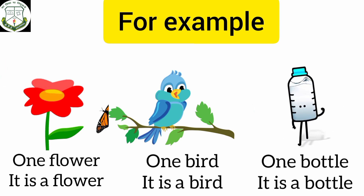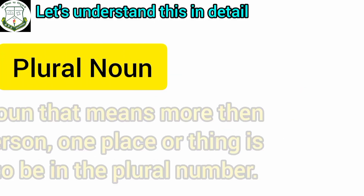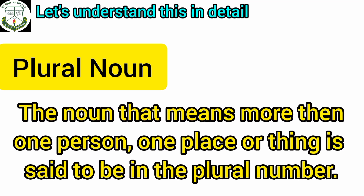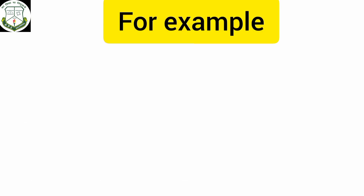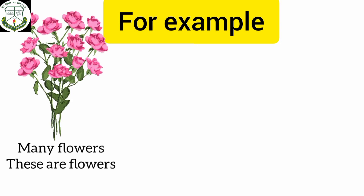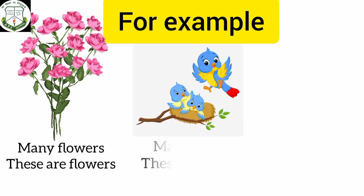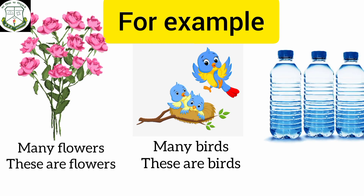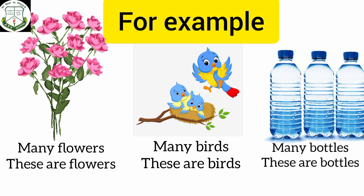Now let's learn about plural noun. The noun that means more than one person, place or thing is said to be in the plural number. For example, many flowers — these are flowers. Many birds — these are birds. Many bottles — these are bottles.